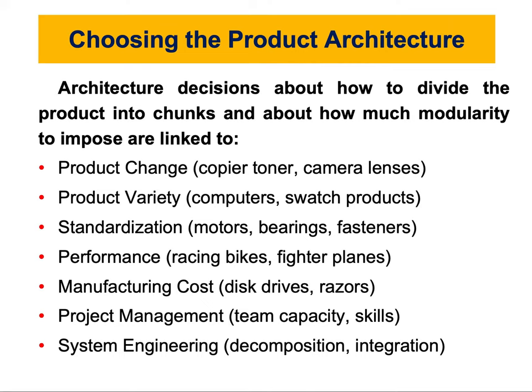The first factor is product change. If you want to be able to change or modify your product, you should go with modular architecture, because each chunk has its own function — if you want to replace it, you take it out and put something else in. Chunks are the physical building blocks of the product, and the architecture defines how these blocks relate to the product's functionality. You need to carefully consider what motivates change for your product.